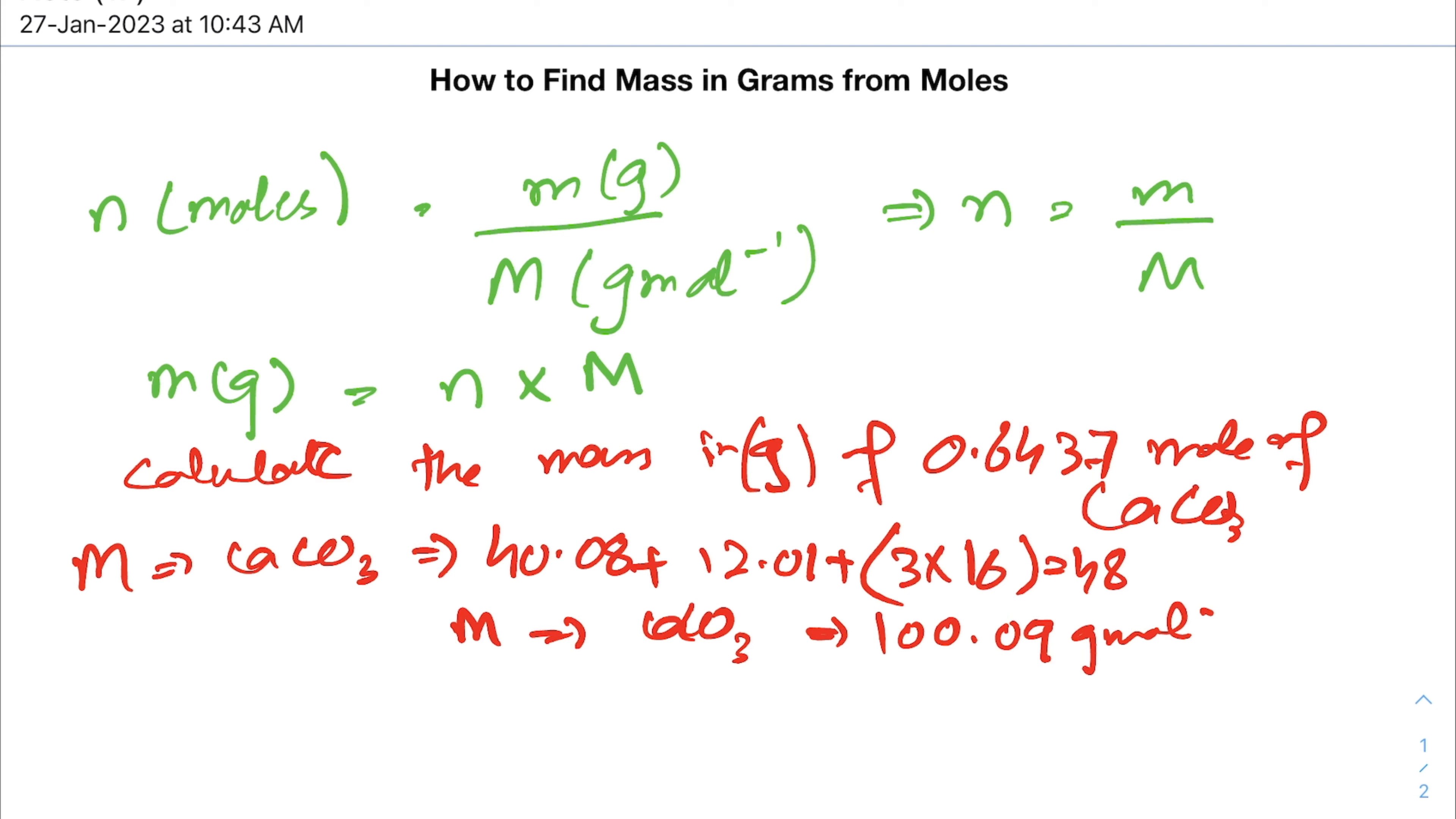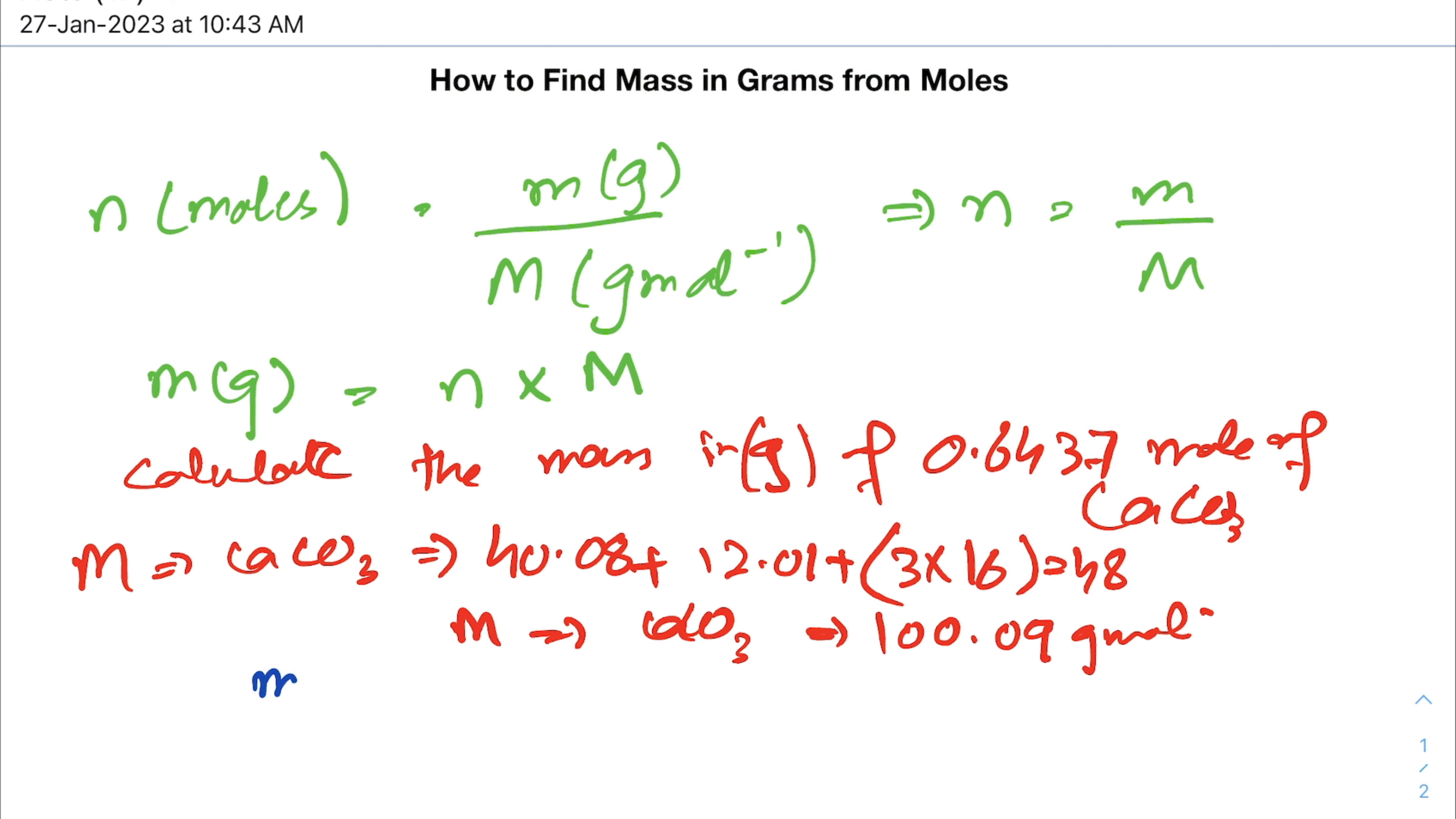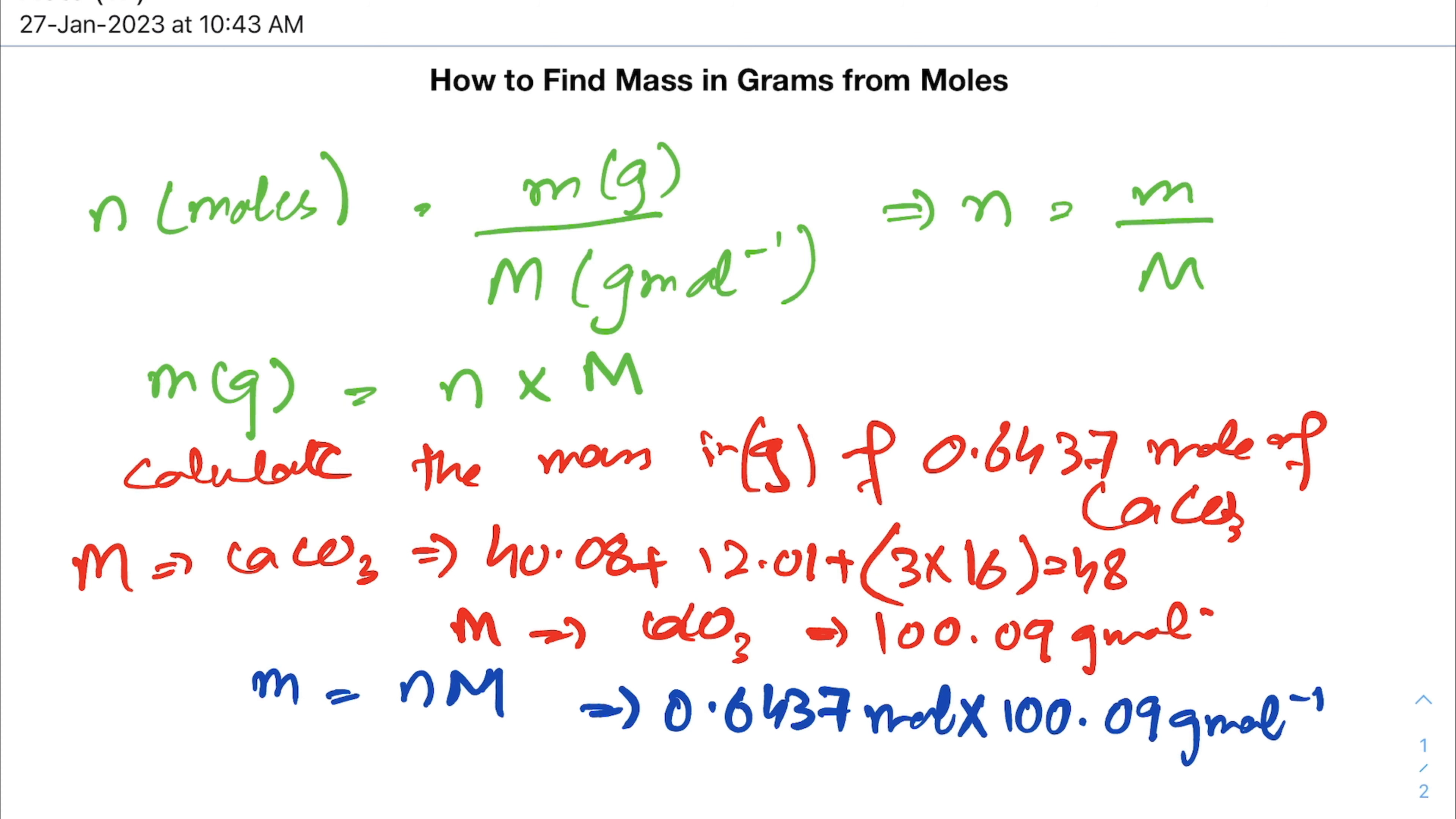Now, putting the values in the formula, we will calculate the mass in grams. Mass in grams equals number of moles times molecular mass. So we have the number of moles which is 0.6437 mole, given in the example, times the molecular mass of calcium carbonate which is 100.09 grams per mole.